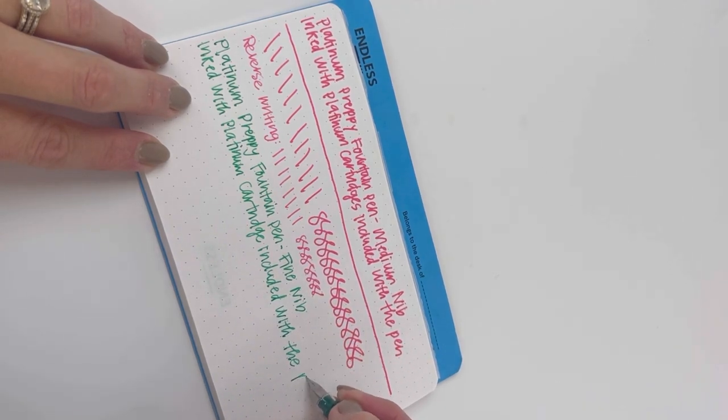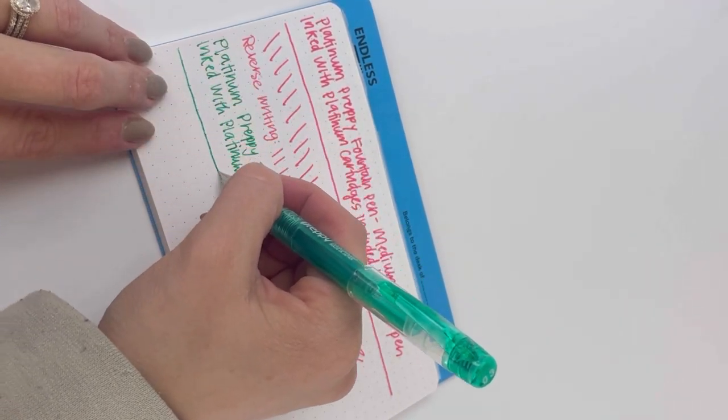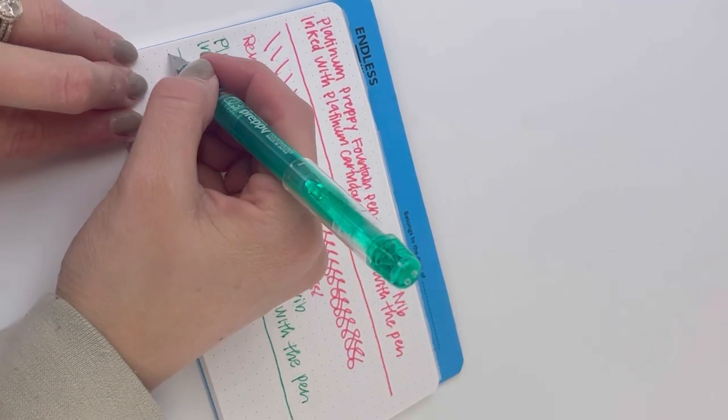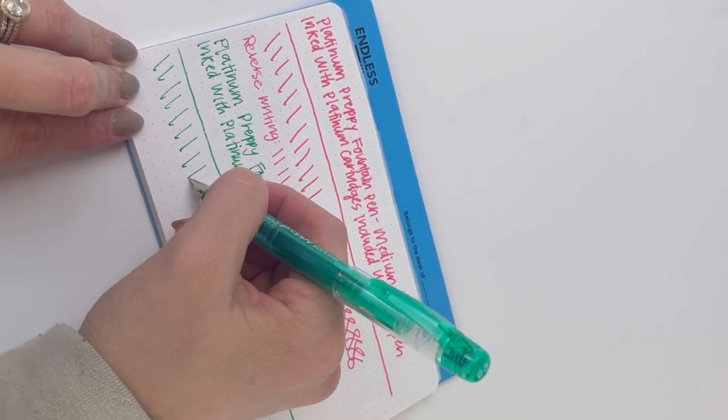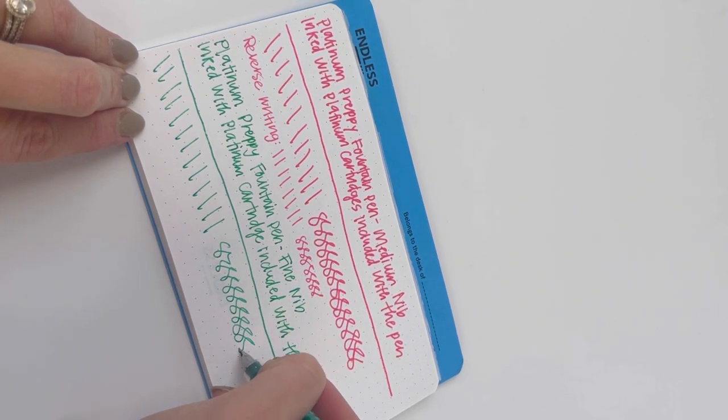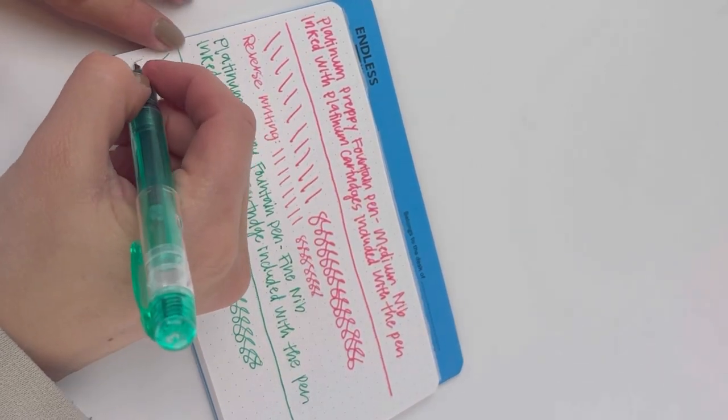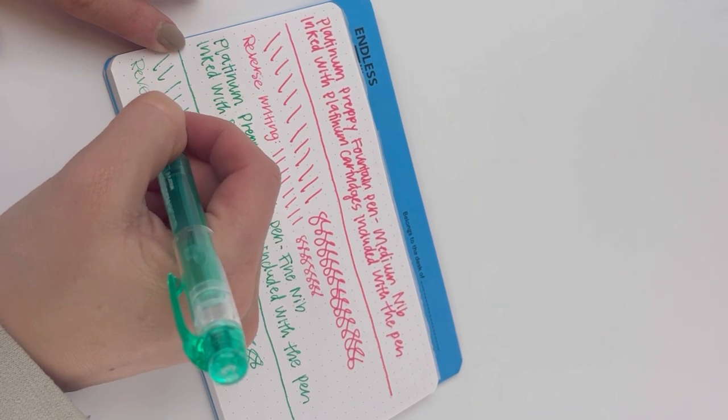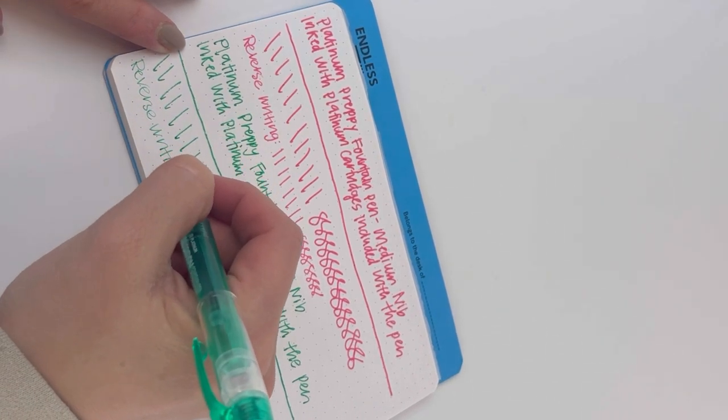This green Platinum Preppy fountain pen is a fine nib, and it's inked with the green ink cartridge that was included with the pen as well. We're putting these writing samples down on an Endless Source Creative Block memo notebook, and they're available in different sizes, and you can check those out on the website.